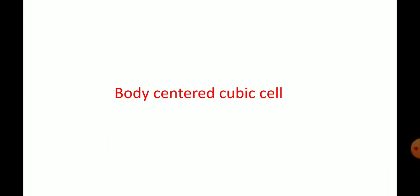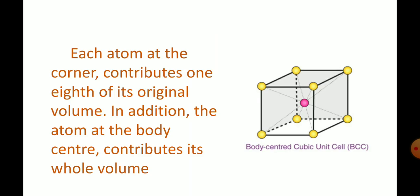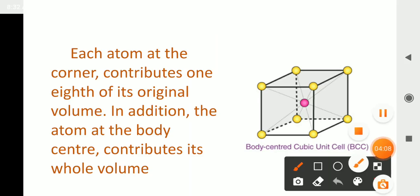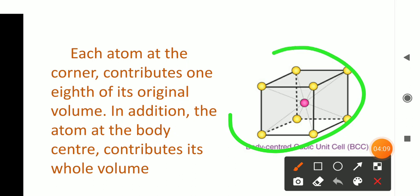Now let us see the second type: the body centered cubic cell. In a body centered cubic unit cell, in addition to the corner positions, the center of the unit cell is also occupied by an atom. Here we have atoms at all eight corners, and in addition, at the center of the cube there is an additional atom — this generates the body centered cubic system.